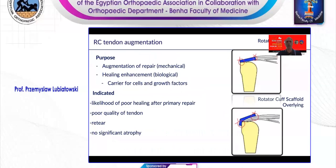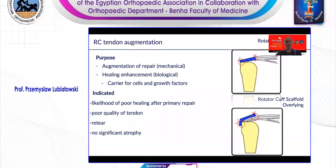One of the ways to help the healing process of the cuff tendon is to use augmentation. It has a mechanical and biological meaning for the repaired tendon. It may be used as a bridge between the tendon and the bone, or as an overlying membrane over the repair area. It is mostly indicated when we see the likelihood of poor healing after primary repair — mostly when poor quality of the tendon is faced — or when facing a re-tear. However, we need to have a nice muscle belly to work with, so no significant atrophy has to be present.